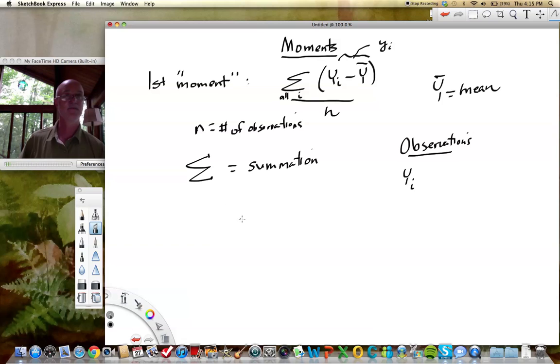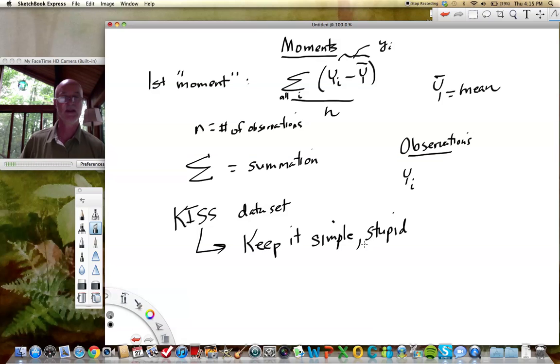I'm going to show you really quickly with what I call a KISS data set that the first moment always is zero. So it's kind of a trivial moment in statistics. Now what do I mean by the KISS data set? I mean keep it simple, stupid. Not simple and stupid, but simple, stupid, meaning me or you. We're going to keep it simple, stupid, and that is KISS. I'm going to do this a lot in this course. I'm going to use very simplified data sets to show particular concepts.